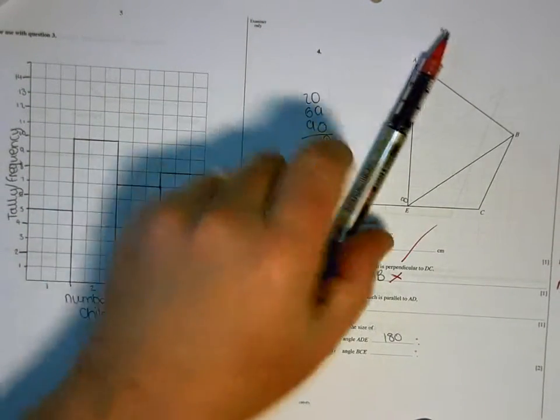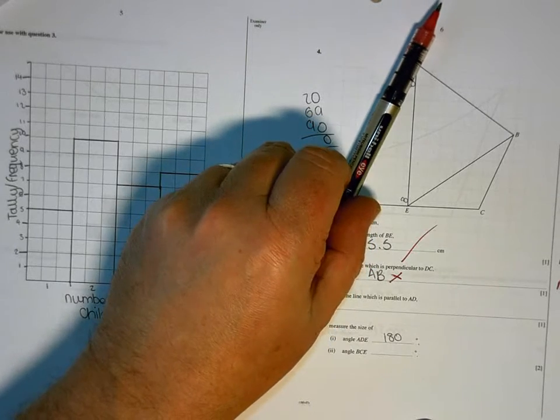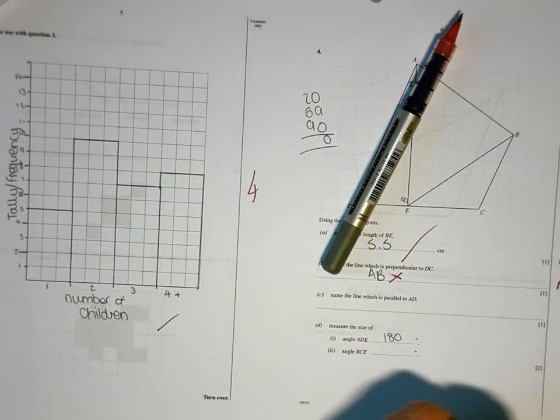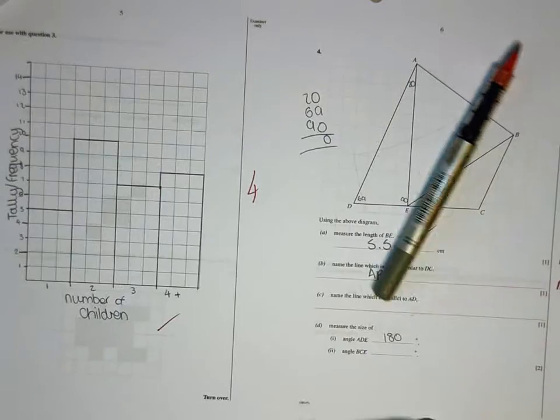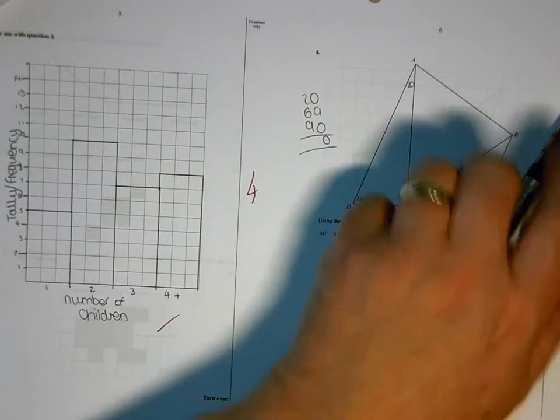And parallel to AD, there's your line AD, so you're looking for the line that is sloping in exactly the same way as that. So if I wrote my pen over, you should see, it's BC.